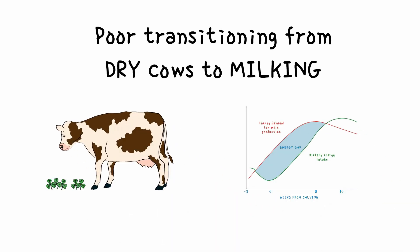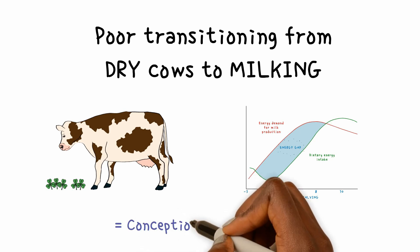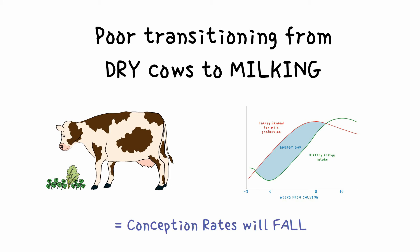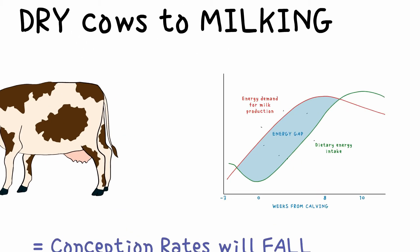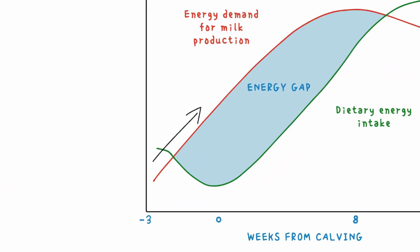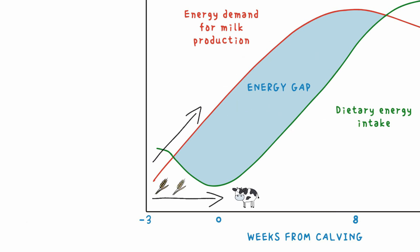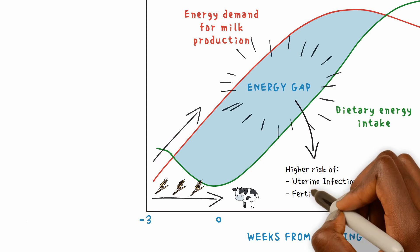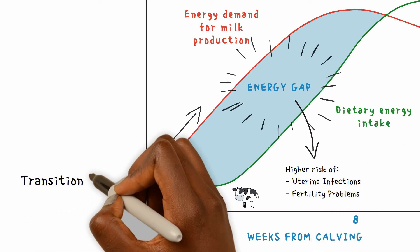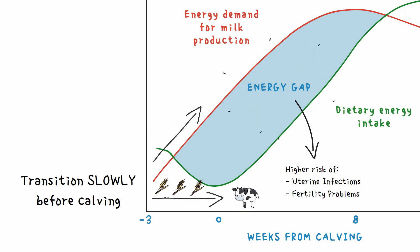Poor transitioning from dry cows to milking: if cows are over fat or have a high negative energy balance, then their conception rates will fall. Holstein cows should be kept on a low energy dense, high roughage diet during the dry period, meaning they have to eat a lot of food to maintain their low energy requirements. This maintains rumen function and a high dry matter intake. When they calve and have high energy requirements to produce milk, they can transition to eating larger quantities of a high energy diet, reducing the negative energy balance. Cows in negative energy balance will have a higher incidence of uterine infections and fertility problems. The transition to a high energy diet should take place slowly over two to three weeks before calving.